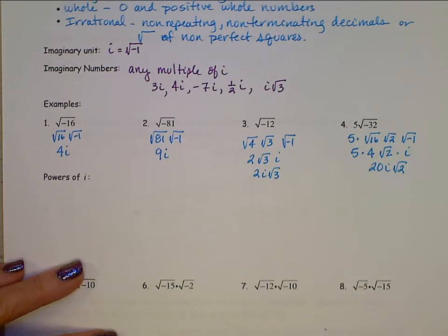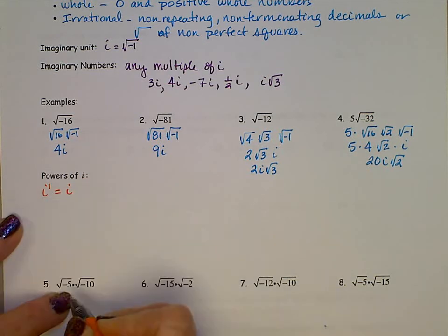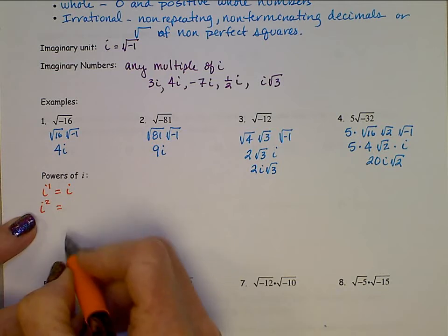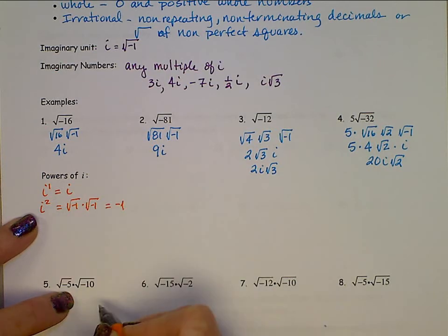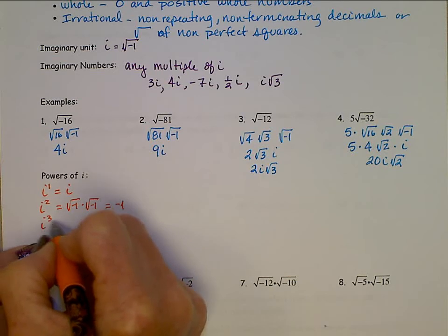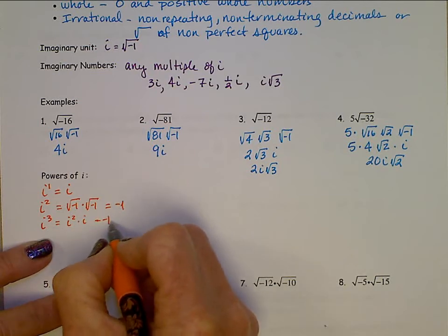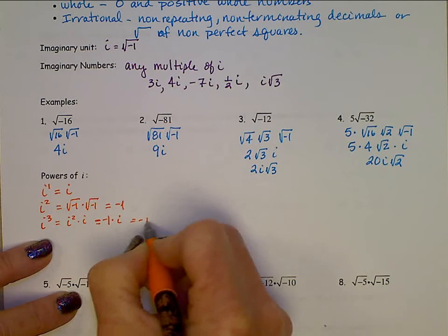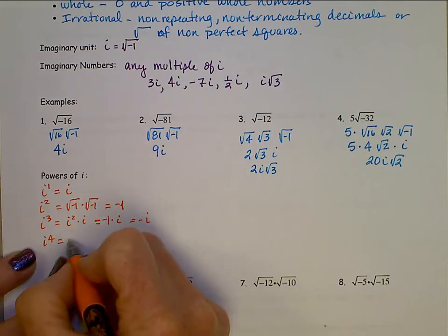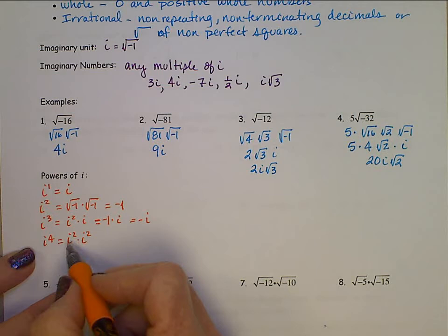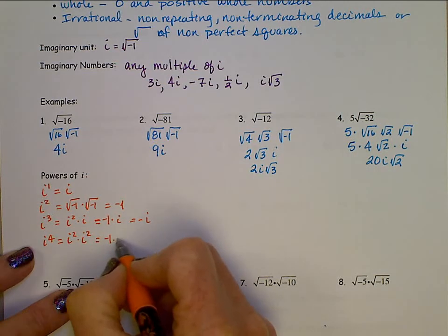Powers of i. i to the first is just i. i to the second is square root of negative 1 times square root of negative 1, which is just negative 1. i cubed is i squared times i, which is negative 1 times i, or negative i. i to the fourth is i squared times i squared — that's negative 1 times negative 1 — which is 1.